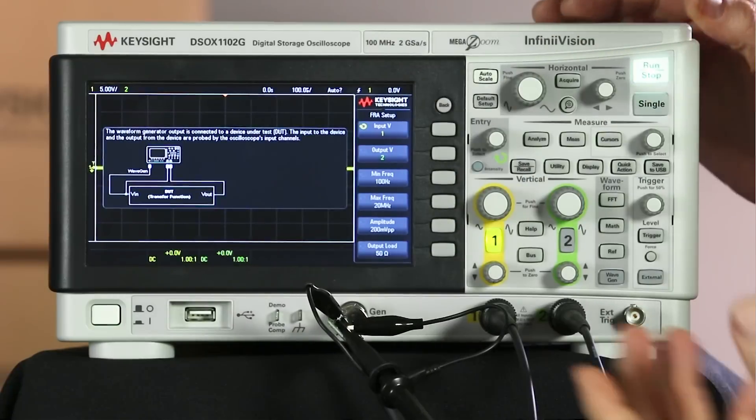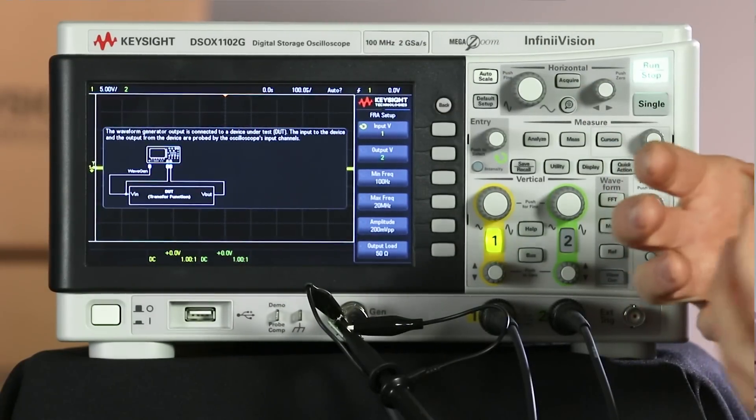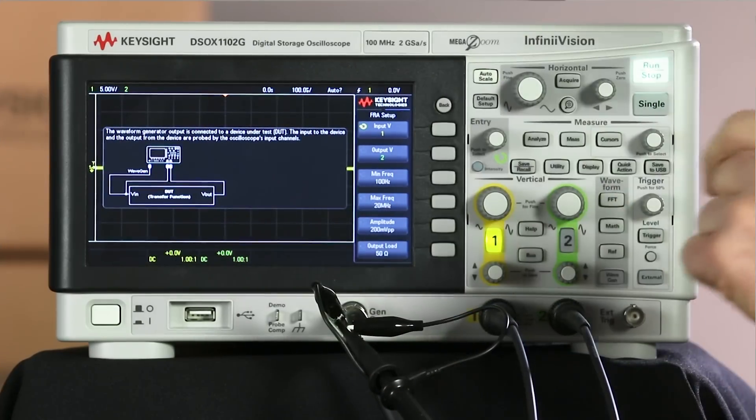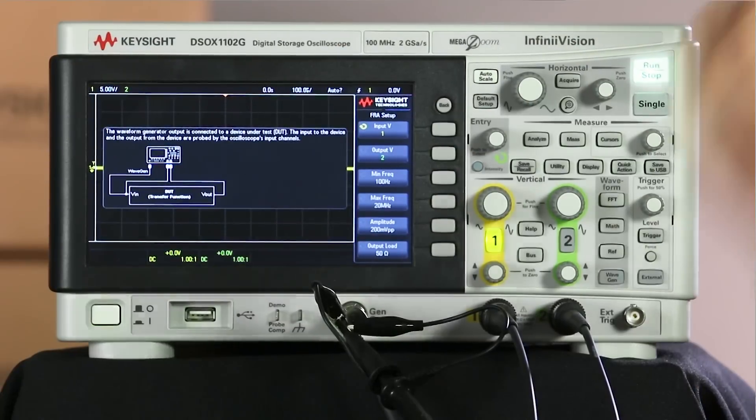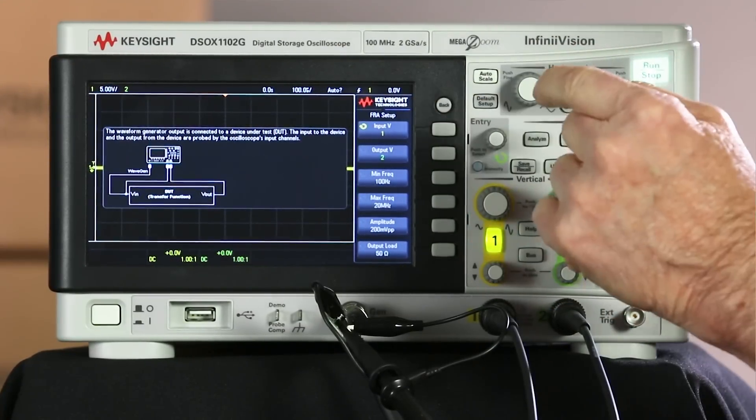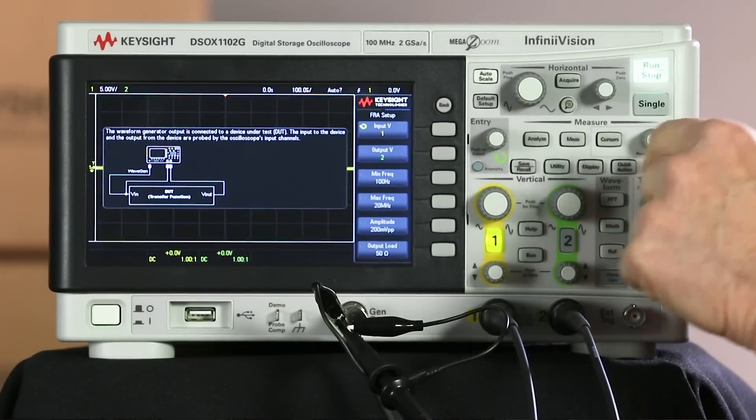Then I could go into the setup menu. There I get a diagram showing me basically a block. So you're testing a black box. And we have a V input, the output, plus we have to connect the generator to stimulate it at the input. We can assign which channel is channel one, which is channel two. I'll make sure I don't bump any knobs this time.